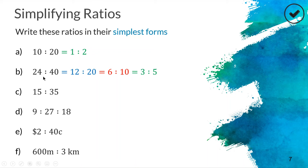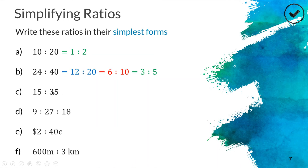If you're good with your times tables, you could get there in one step: 24 is three times eight, and 40 is five times eight, so it's three eights to five eights — which is just three to five. For question c, we're looking for a number that multiplies into both 15 and 35. If you're saying five, you're correct. Fifteen is three lots of five and 35 is seven lots of five, so we divide both sides by five and get three to seven.